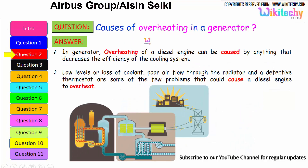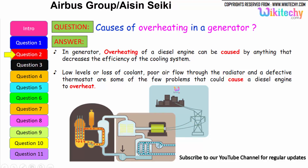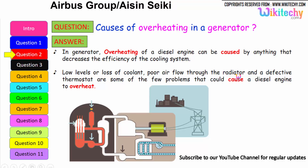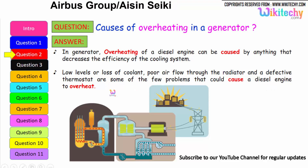Let us move on to the next question: causes of overheating in a generator. Overheating of a diesel engine can be caused by anything that decreases the efficiency of the cooling system. It can be due to the loss of coolant or low levels of coolant, poor air flow through the radiators, and a defective thermostat — these are some of the few problems that could cause a diesel engine or a generator to overheat.